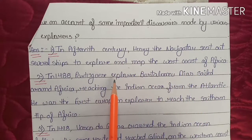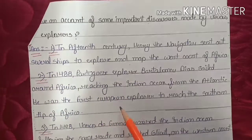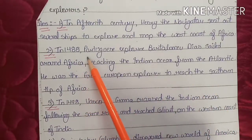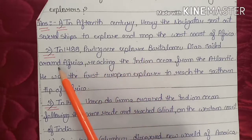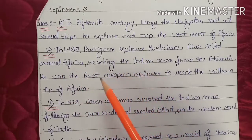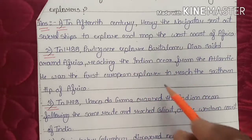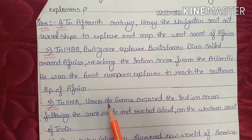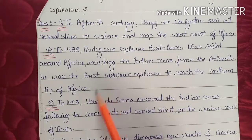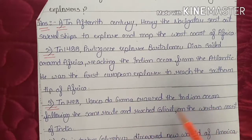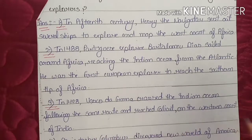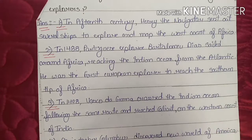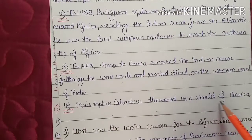In 1488, Portuguese explorer Bartolomeo Dias sailed around Africa, reaching the Indian Ocean from the Atlantic — he was the first European explorer to reach the southern tip of Africa. In 1498, Vasco da Gama crossed the Indian Ocean following the same route and reached Calicut on the west coast of India. Christopher Columbus discovered the new world of America.